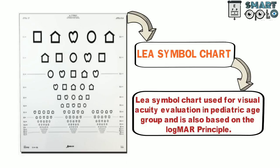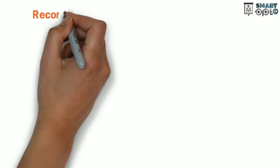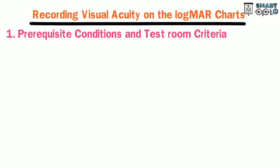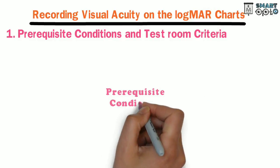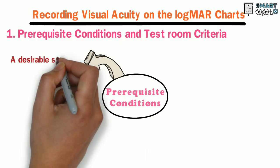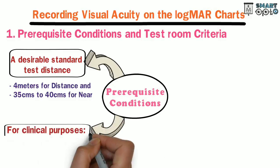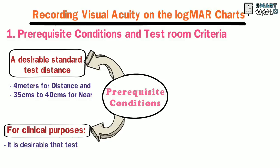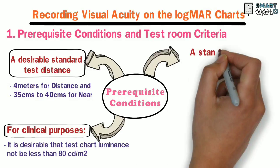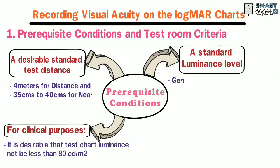Recording visual acuity on the LogMAR charts: prerequisite conditions and test room criteria. A desirable standard test distance is needed — that is 4 meters for distance and 35 to 40 centimeters for near. For clinical purposes, it is desirable that the test chart luminance should not be less than 80 candelas per meter squared.